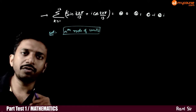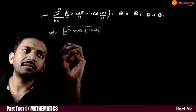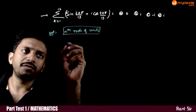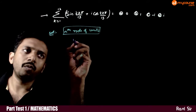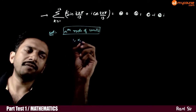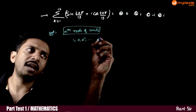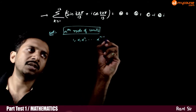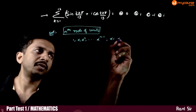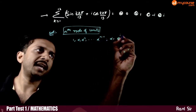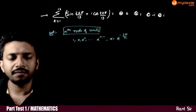So, what do we know about nth roots of unity? The nth roots of unity are: 1, alpha, alpha squared, and so on, up to alpha power n minus 1, where alpha is equal to e power i times 2π by n.